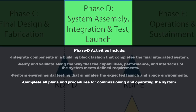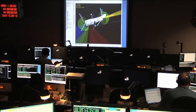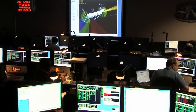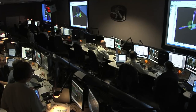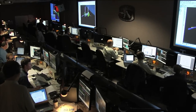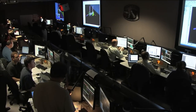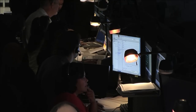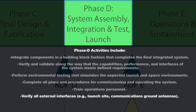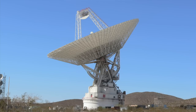You're going to complete all your plans and procedures for commissioning the satellite and operating the system. You're going to train all operations personnel to make sure everyone involved in the next phase is properly trained on how the system works and all the contingencies they might need if something goes wrong — prepared to operate on a good day and a bad day. You'll also verify all external interfaces, including the launch site, launch vehicle, and communications ground antennas.